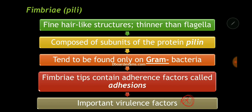Fimbriae are fine hair-like structures. They are thinner than flagella. They are composed of subunits of a protein called pilin, and fimbriae tend to be found only in gram-negative bacteria. The fimbriae tips contain adherence factors called adhesins. So the pili, or fimbriae, are very important for bacterial adhesion to the host, and that is why they are very important for virulence.